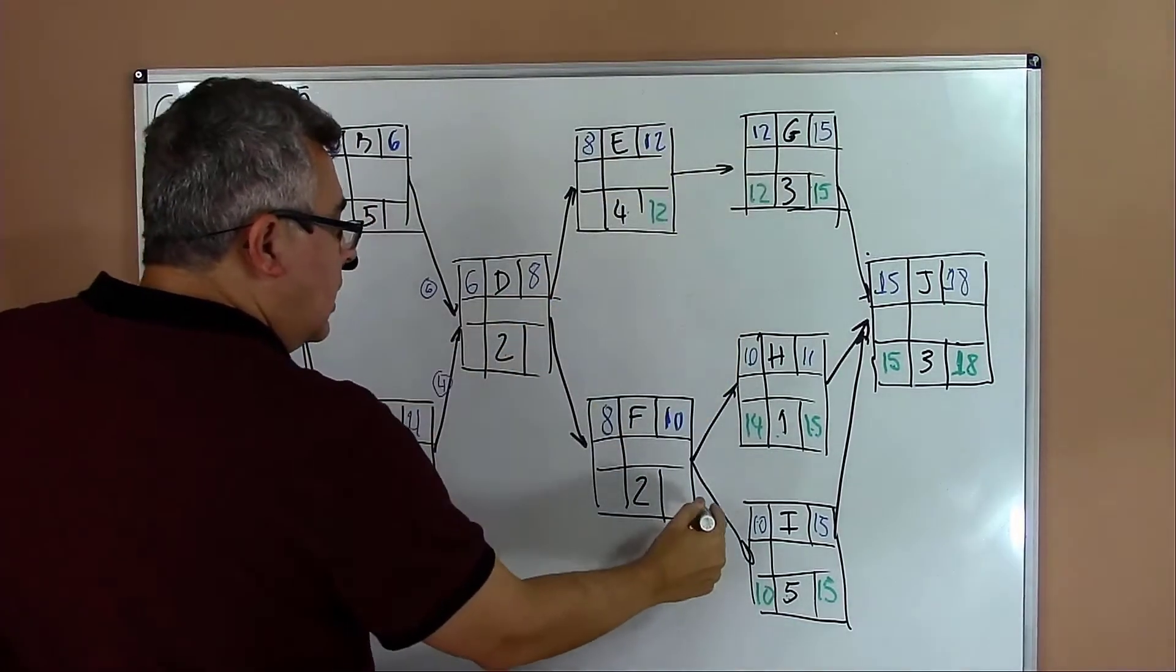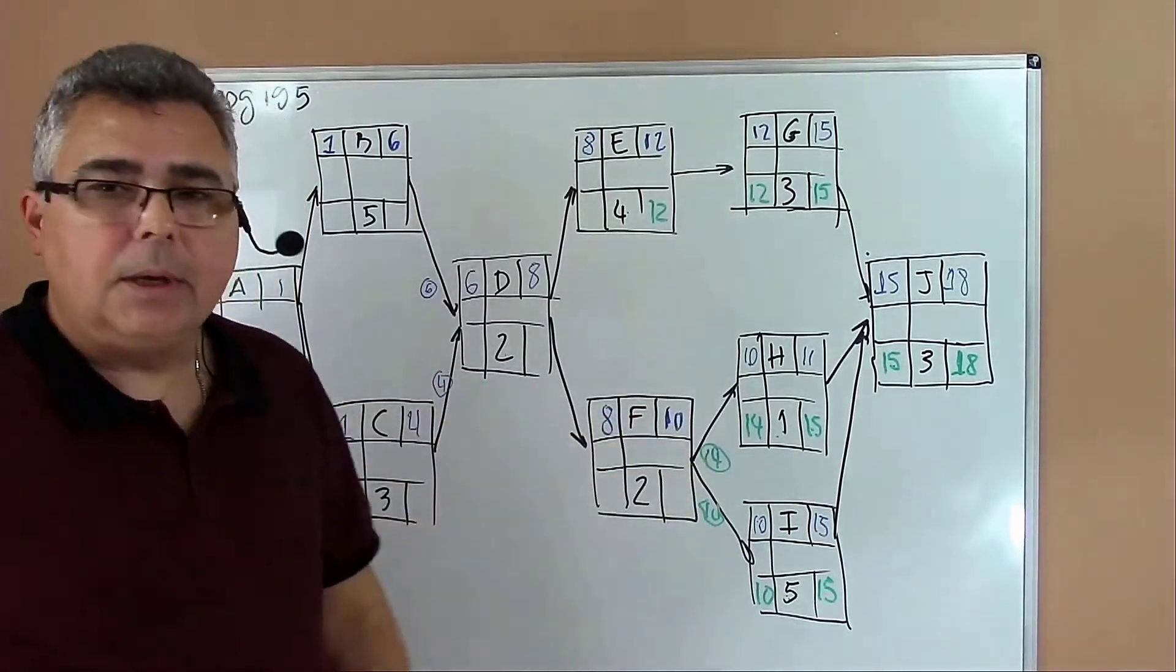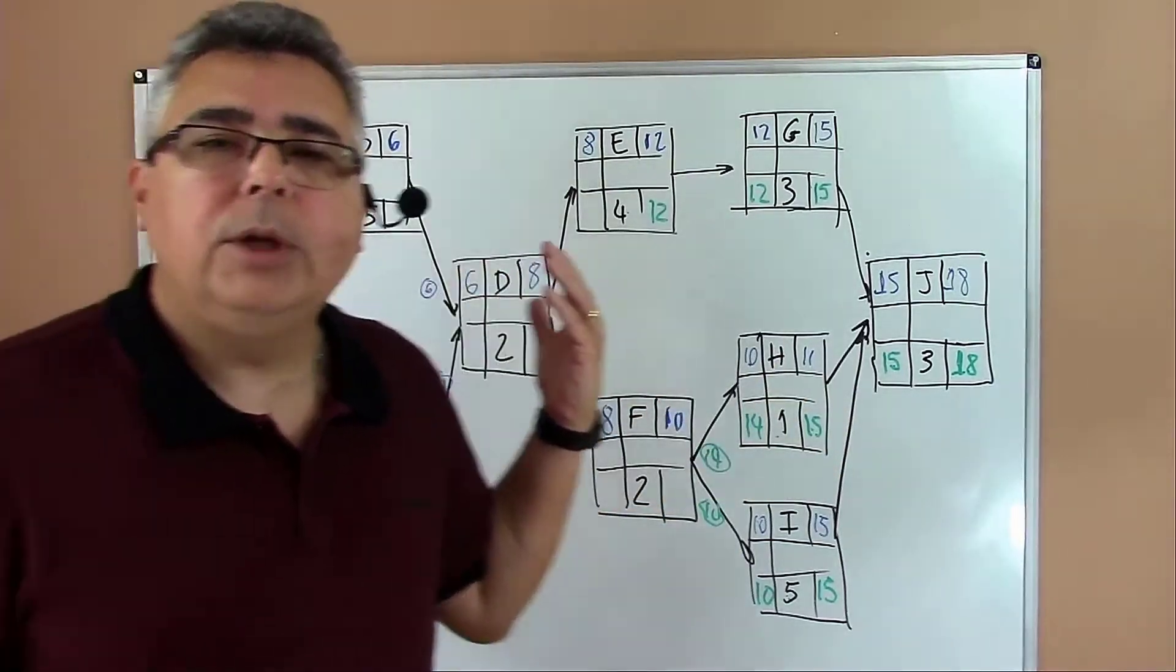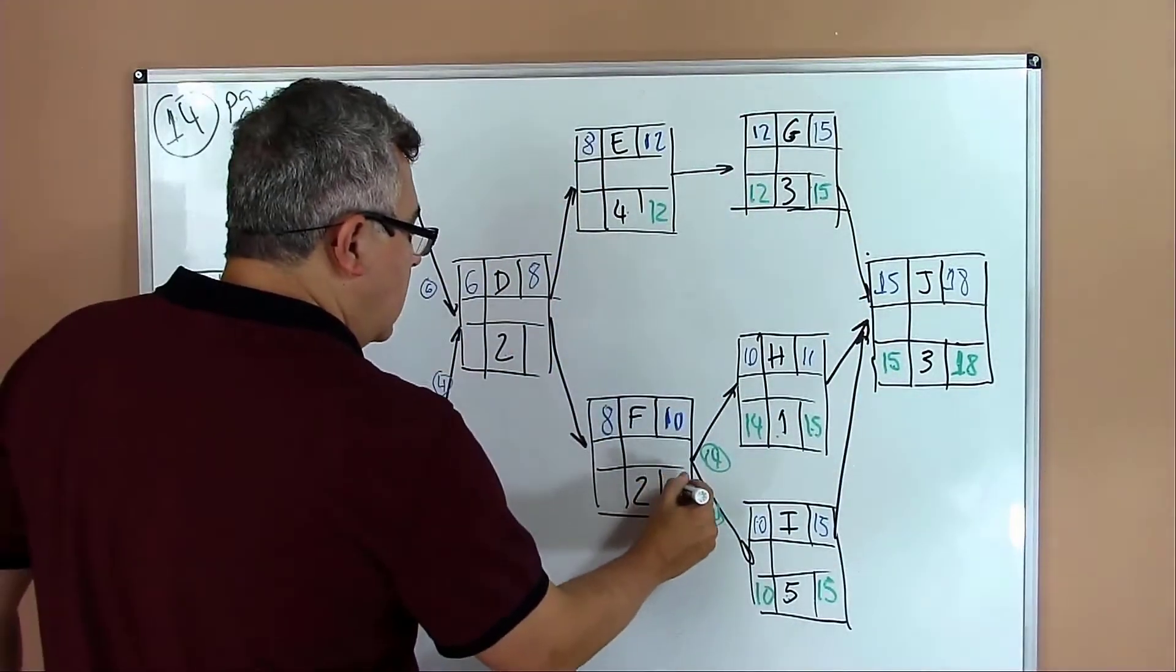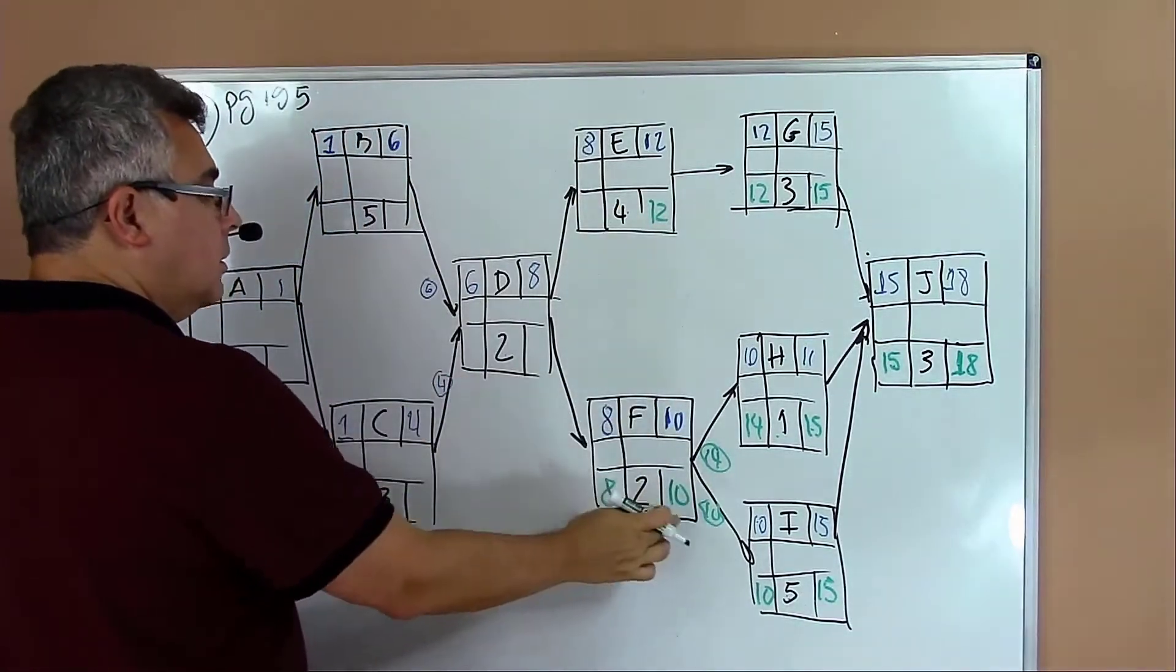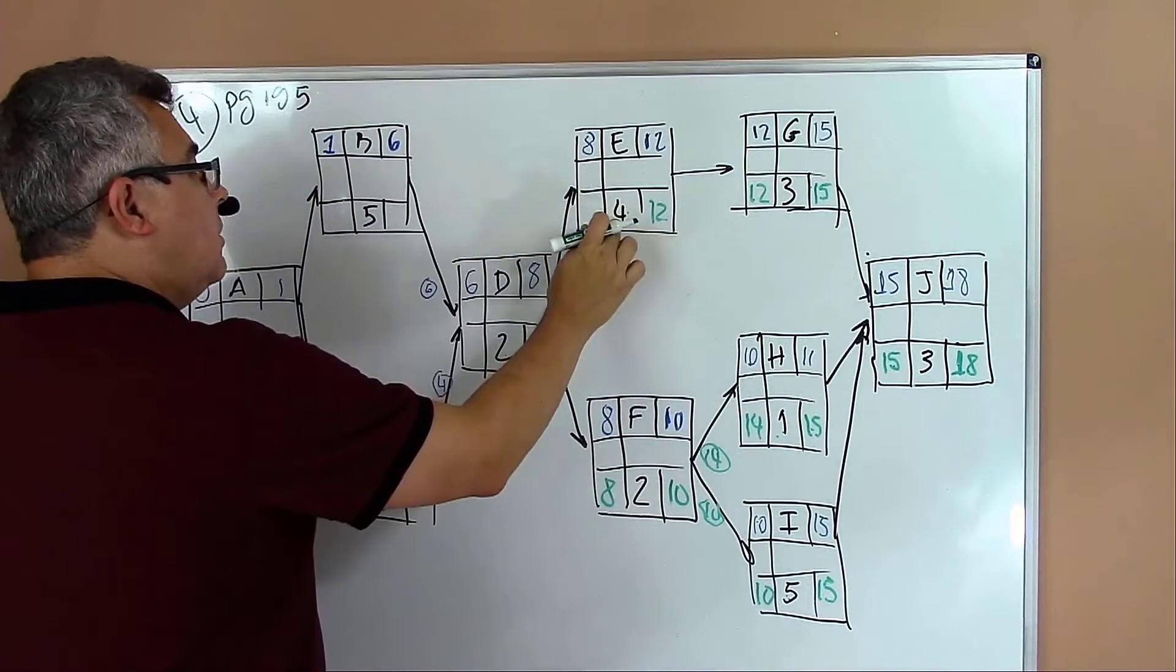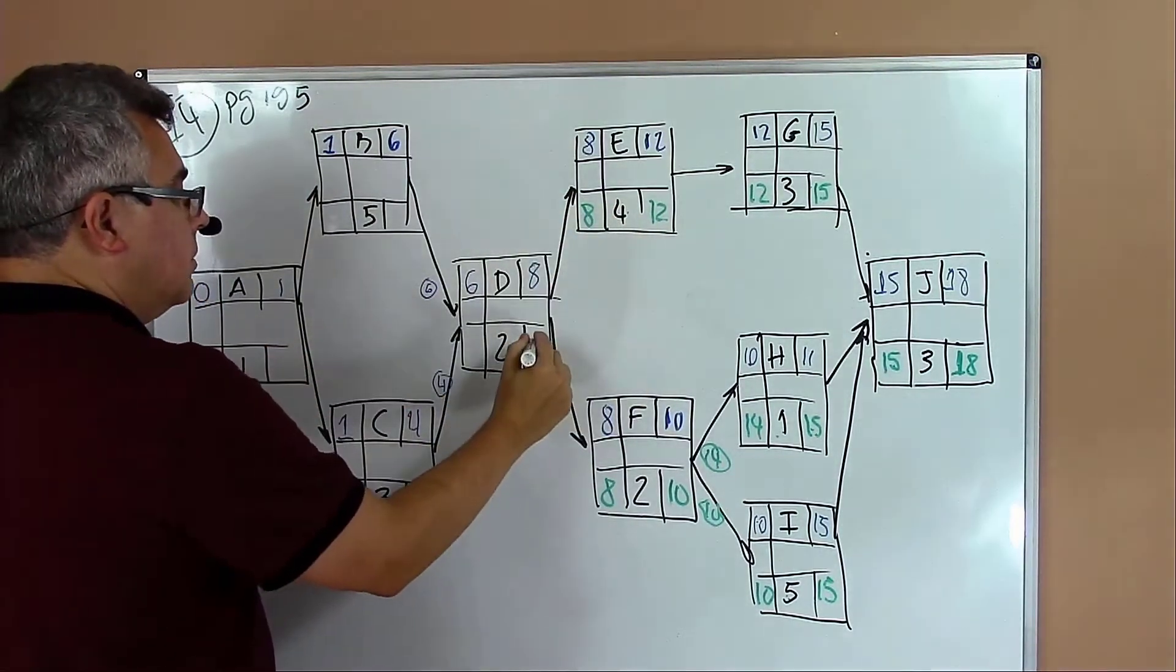Then I move backward. Fifteen minus three equals twelve. I move twelve to activity E from activity G. Here I have two numbers, fourteen and ten. Which one should I pick? In the backward path we should pick the lower number. Pick the lower number and start computing. Ten minus two equals eight. Fourteen minus four equals eight.